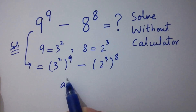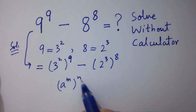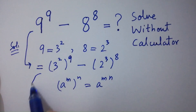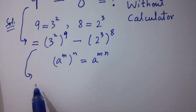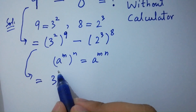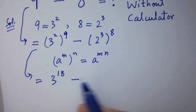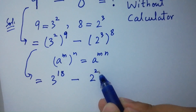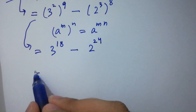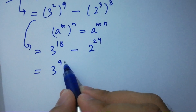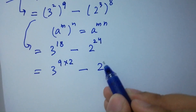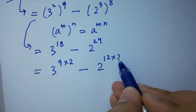Using the rule a to the power m, to the whole power n, equals a to the power mn, it will be 3 to the power 2 times 9, which is 18, minus 2 to the power 3 times 8, which is 24. This is the same as 3 to the power 18 minus 2 to the power 24.